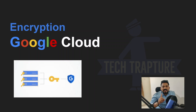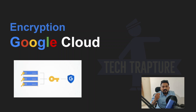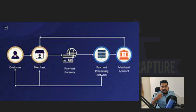First is encryption at rest, meaning whenever data is stored in a particular location it has to be encrypted. Second is encryption in transit, meaning when data is traveling from one location to another or from one server to another. For example, when you are doing a financial transaction or making a payment for any service and you enter your credit card or debit card details and submit the form.